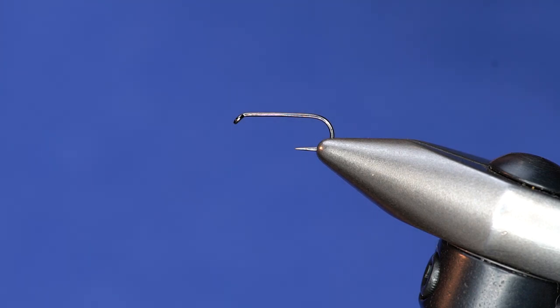So this is an unweighted soft hackle. I'll usually use this not as deep with a floating or intermediate line depending on where the fish are. But it's nice because it's unweighted so it can suspend and you can just work it slowly above weed beds or just down from the surface.